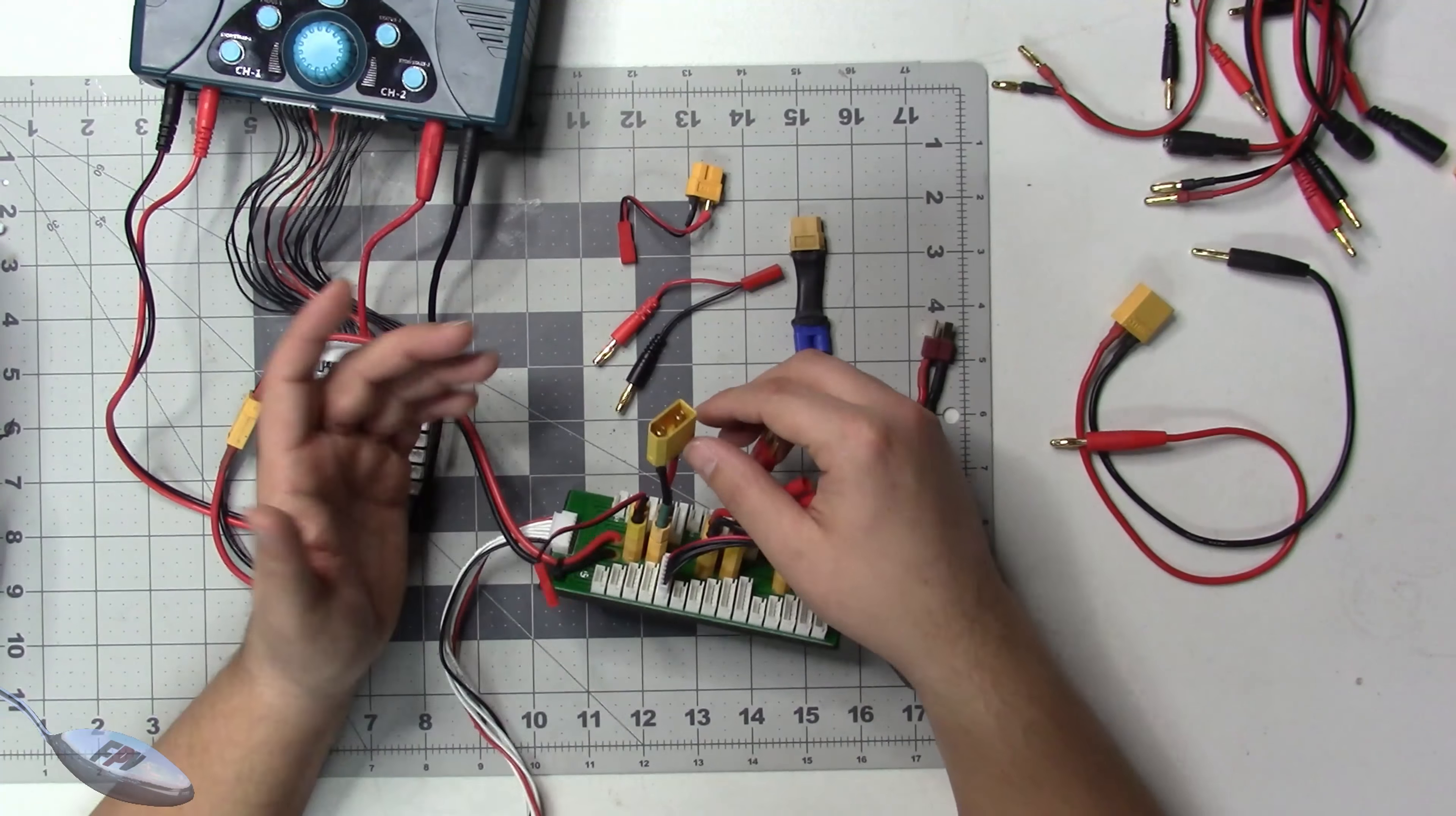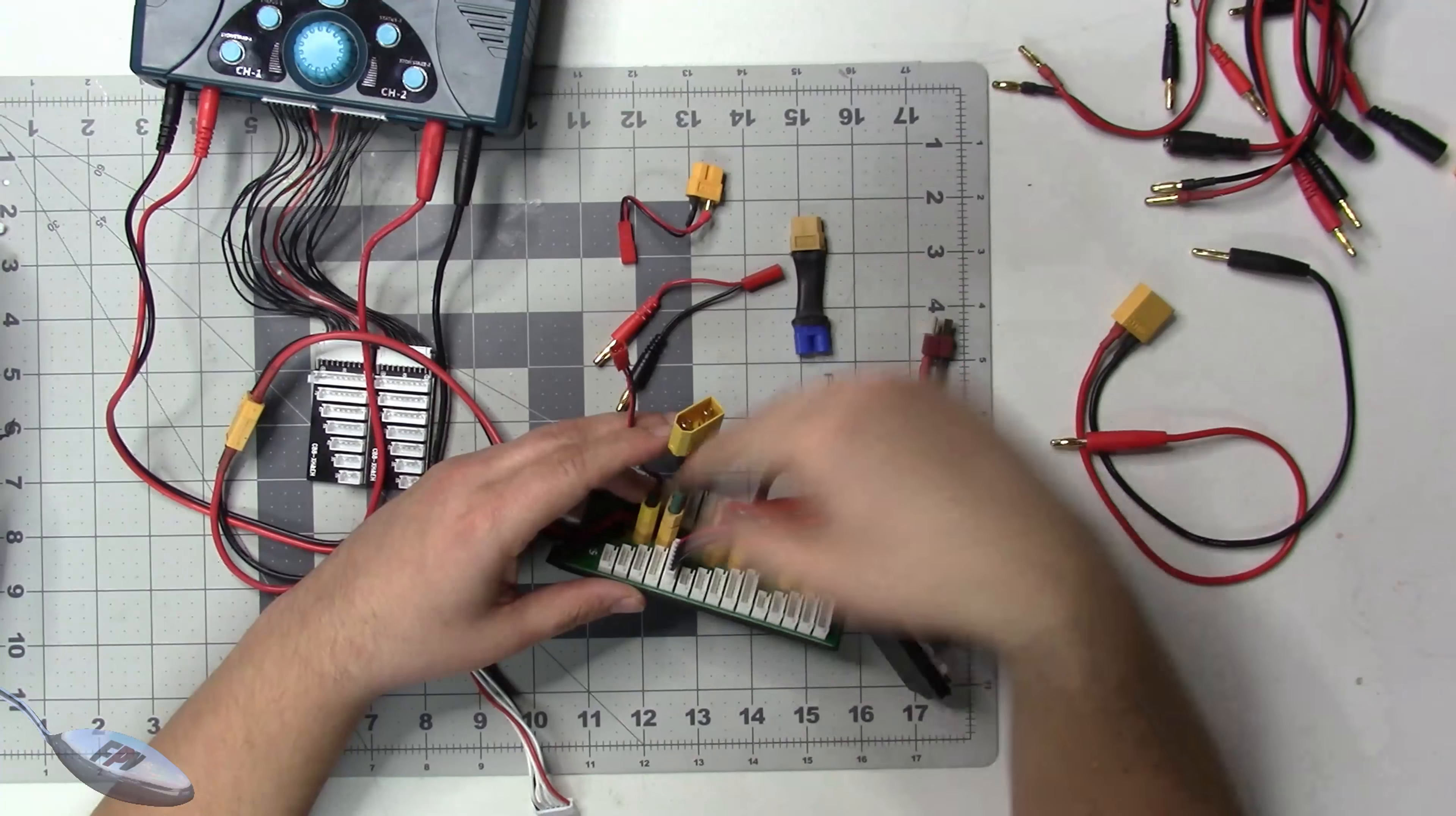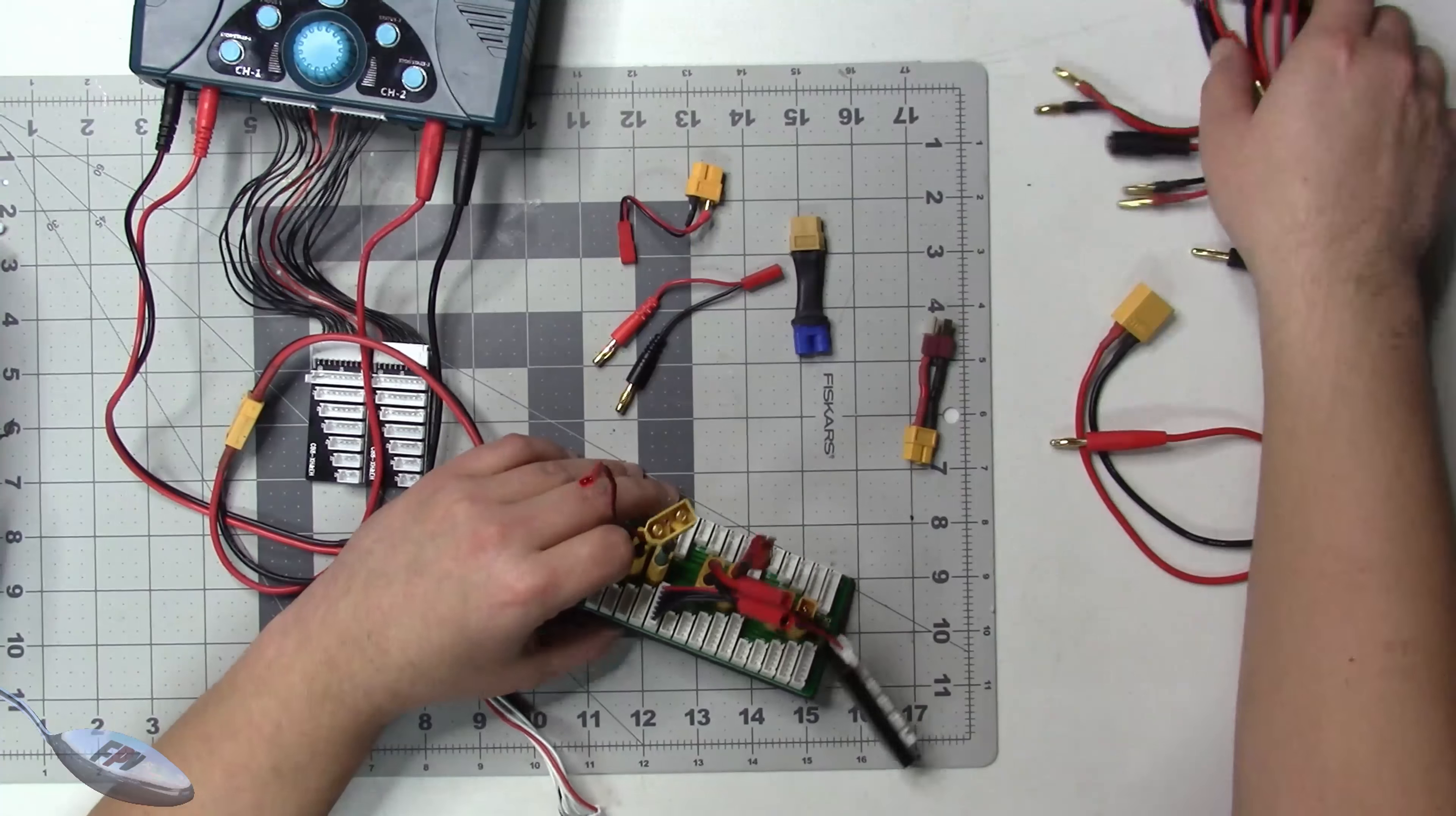If I have an XT90 battery and I want to put for some reason 12s out of one of these cables, I could just plug my XT90 into this and then plug something else into this. It ends up being this universal adapter board as well.